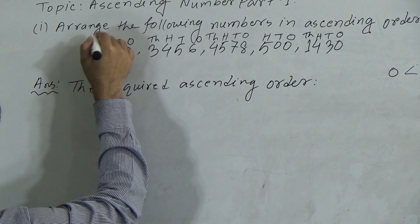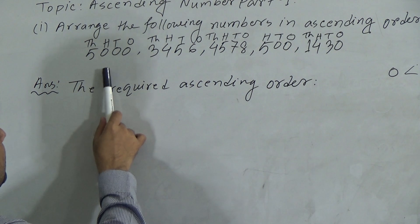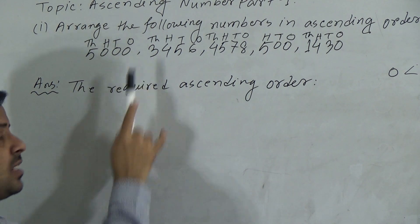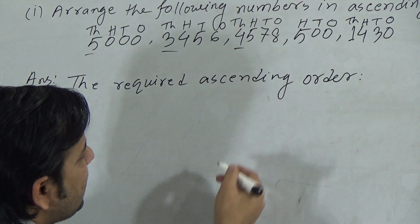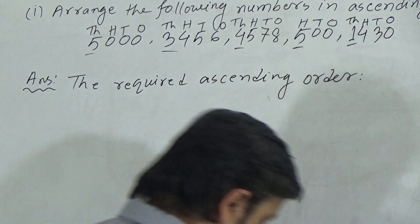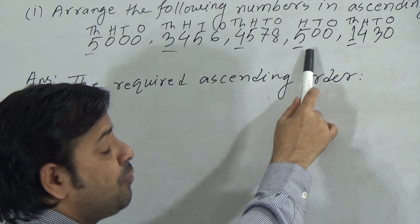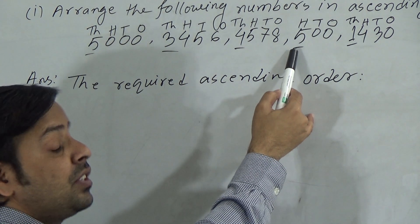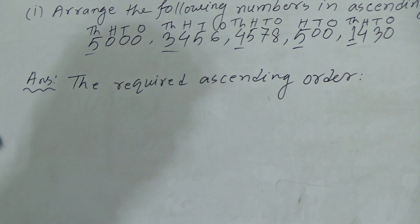If you notice, in the first number the highest position is thousands, in the second number the highest position is thousands, and the same for the third and fifth numbers. However, in the fourth number — 500 — the highest position is hundreds, as there is no thousands digit. So 500 is the smallest number among these five numbers.